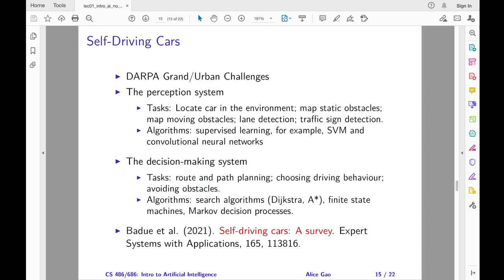The decision-making system needs to perform tasks such as planning a route, determining what to do next, and avoiding obstacles. These tasks require algorithms for searching and planning, for example, search algorithms such as Dijkstra A-star, finite state machines, and Markov decision processes. If you are interested, check out the survey paper for a comprehensive literature review on self-driving cars.